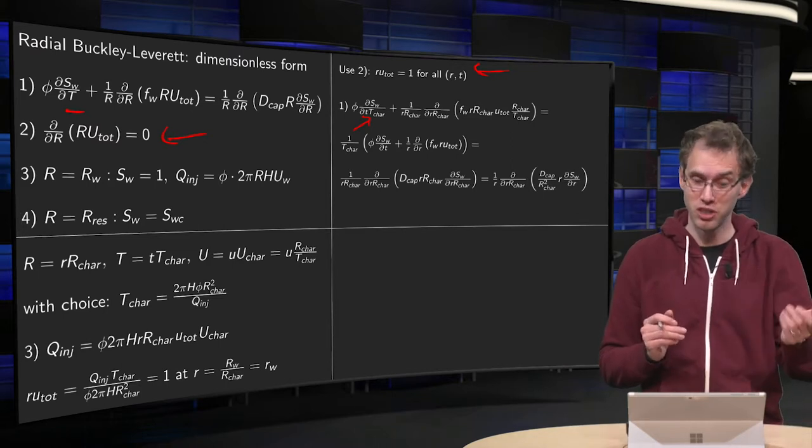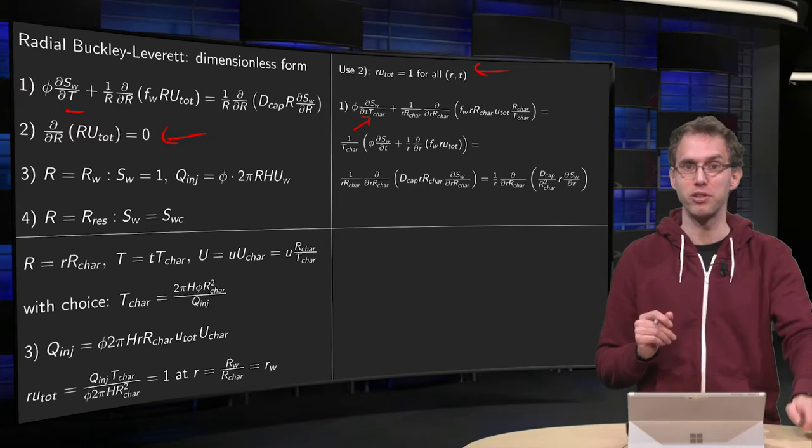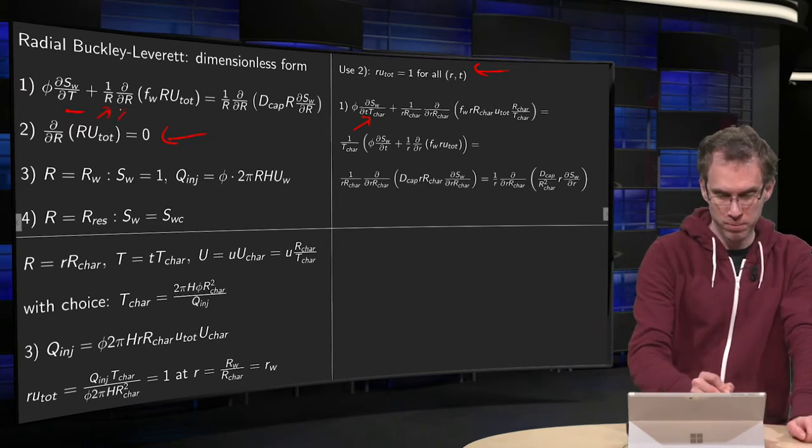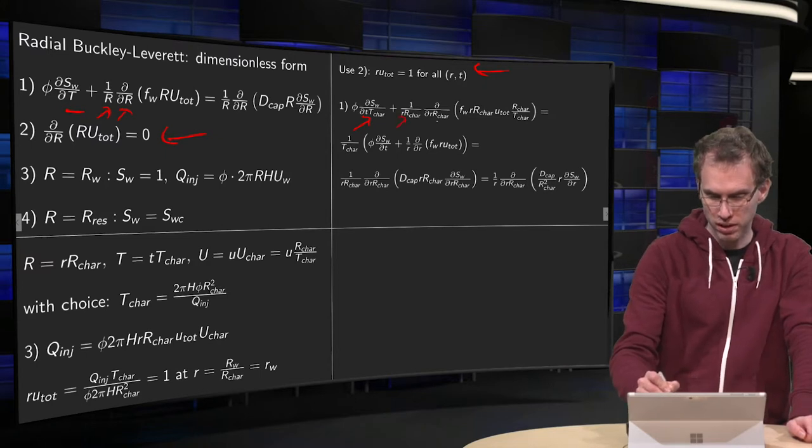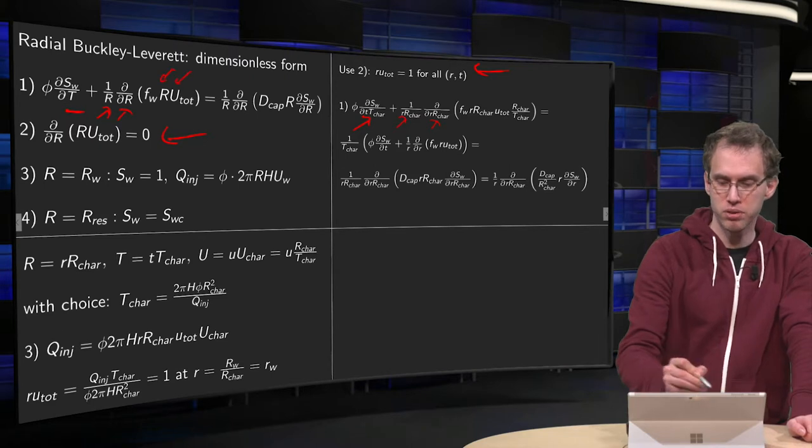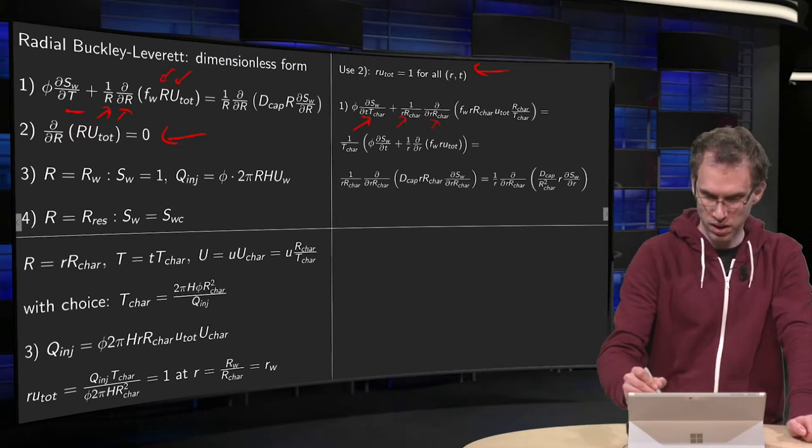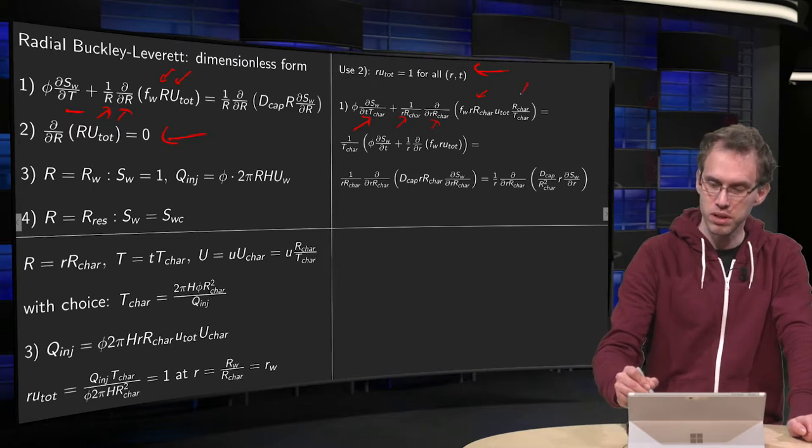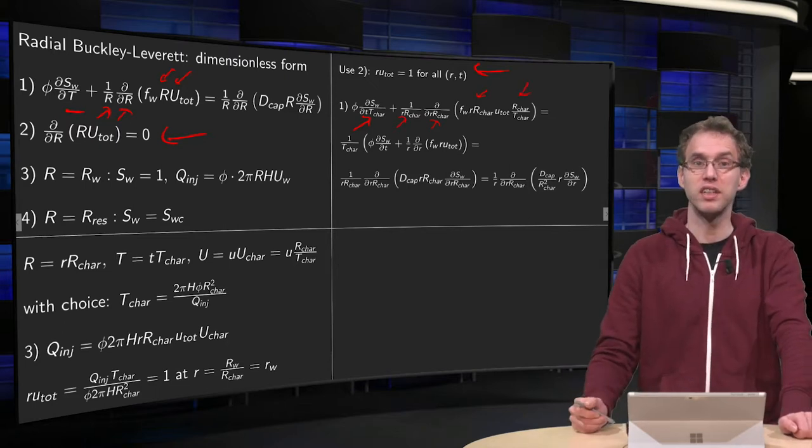The SW is a volume fraction, so it is already dimensionless. Porosity is the same. We have 1 over R and a DDR. So, we get R-characteristics over here. We have R times U-total over here. So, we get an R times R-characteristics and a U-total times R-characteristics over T-characteristics.